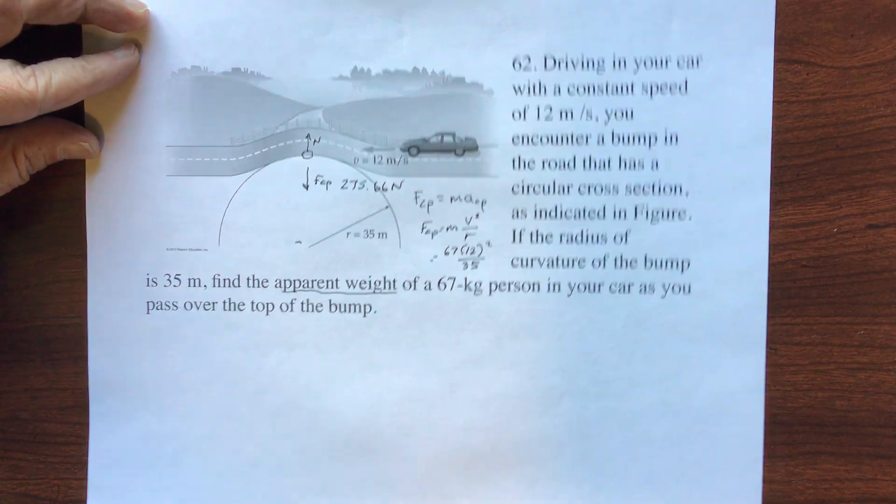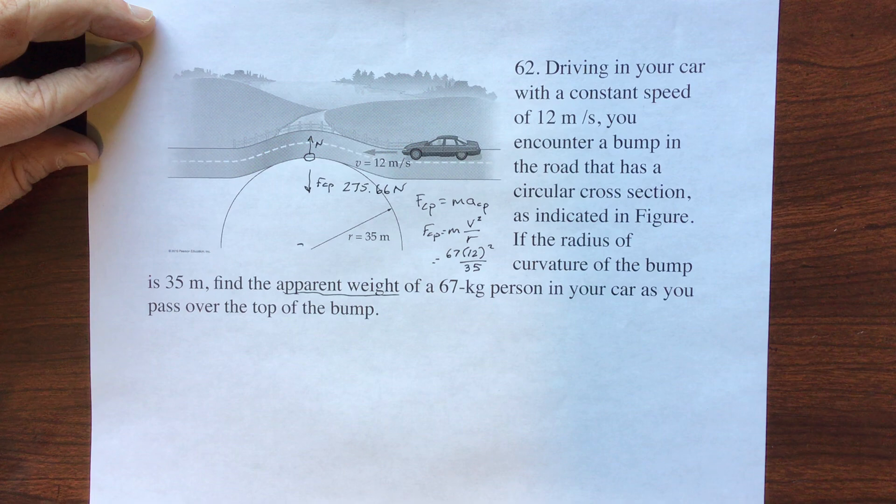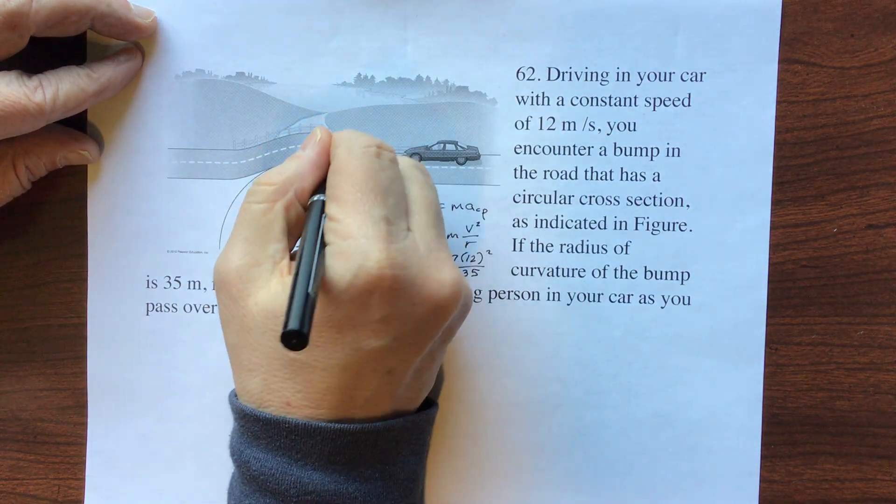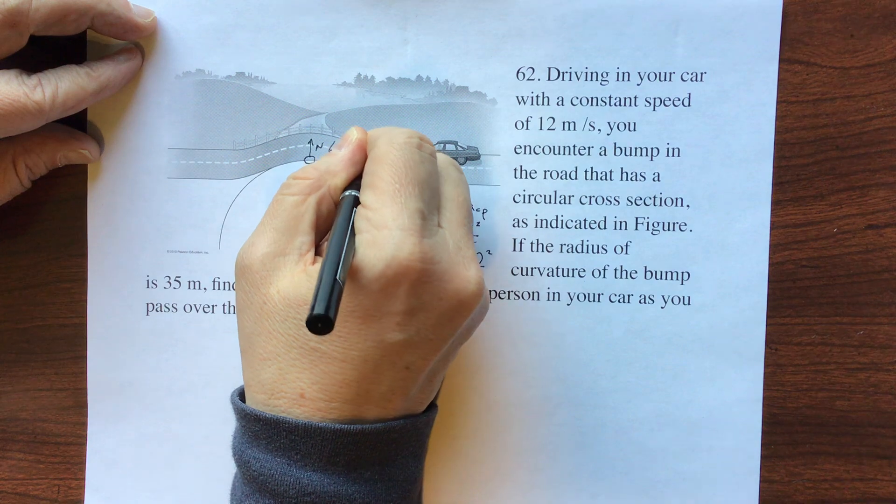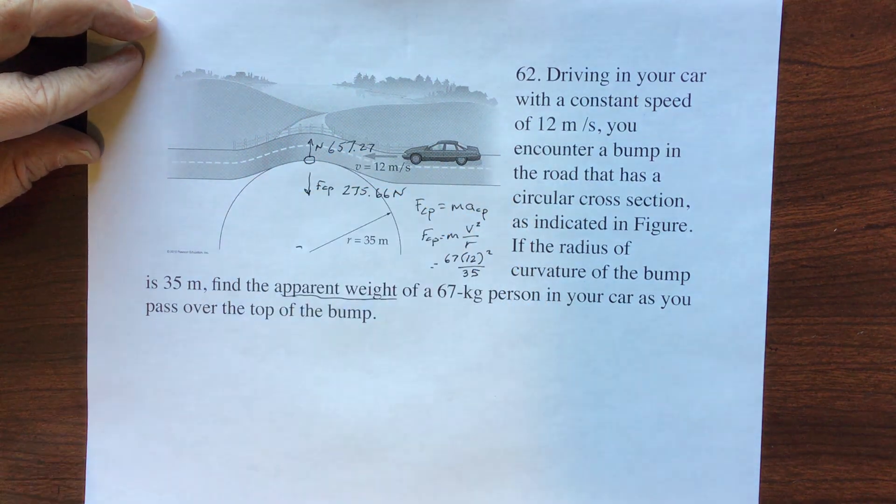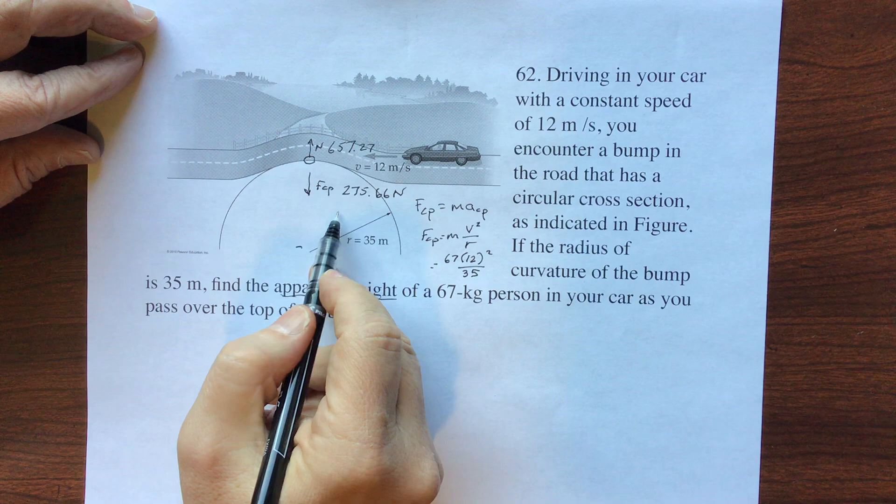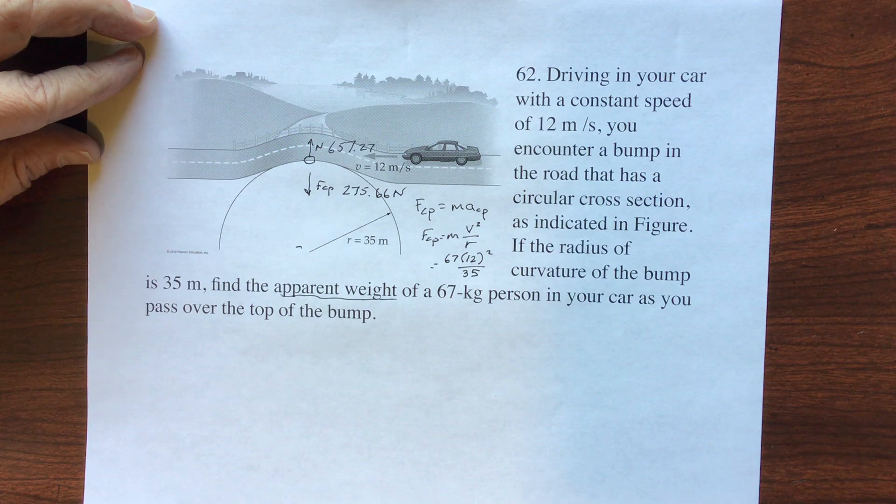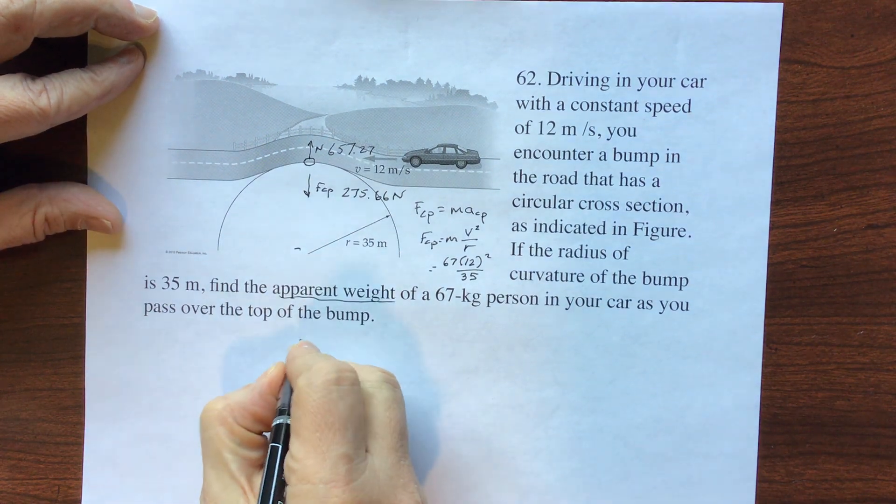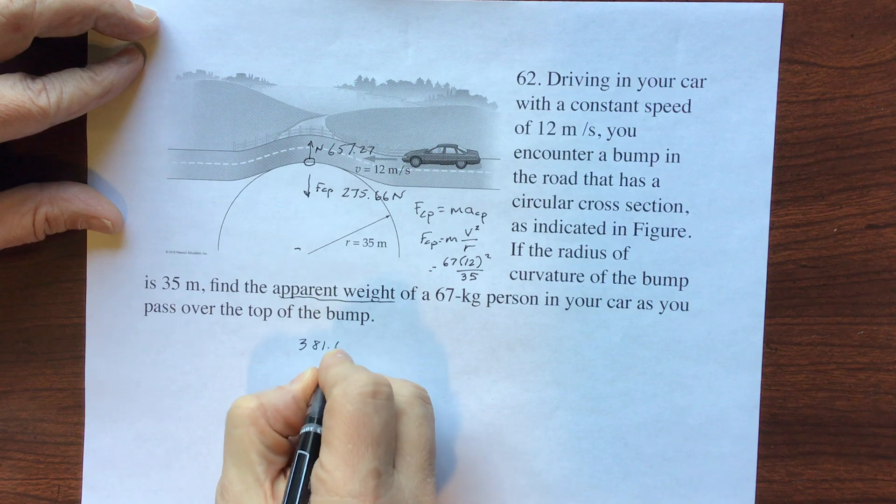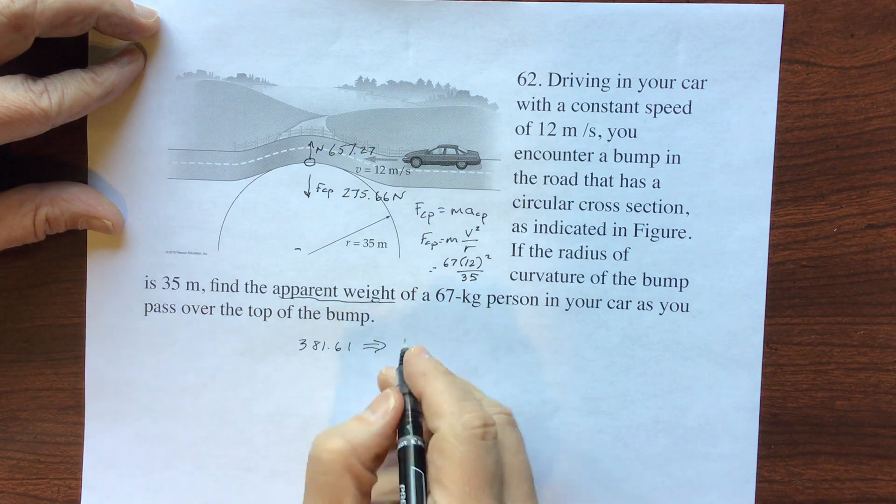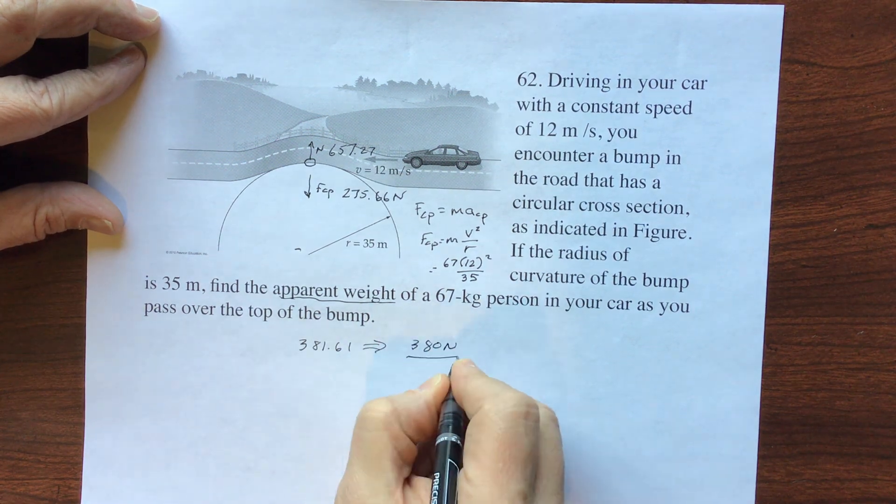What is your normal force? You are 67 kilograms times 9.81, so that's mg, so your normal force is 657.27. This is the force that the seat is exerting on you, but you have to cancel. You're canceling this much out, so I'm going to subtract 275.66, and I have 381.61. How many significant digits? 2, 2, 2, so this would be 380 newtons.